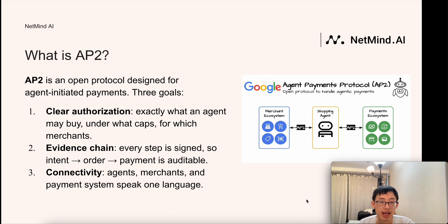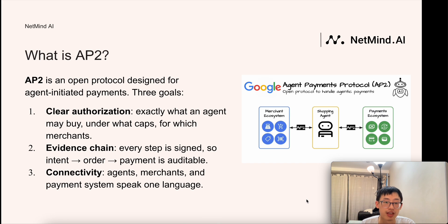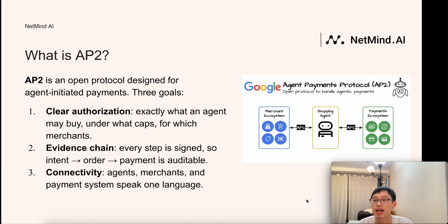So what is AP2? AP2 is an open protocol designed for agent-initiated payments, announced by Google in September. There are three goals: first, clear authorization — exactly what an agent may buy, under what caps, for which merchants. Second, an evidence chain — every step is signed, from intent to order to payment, all auditable. Third, connectivity — agents, merchants, and the payment system speak one language. A broad set of companies has participated, including MasterCard, American Express, PayPal, Coinbase, Revolut, and more.